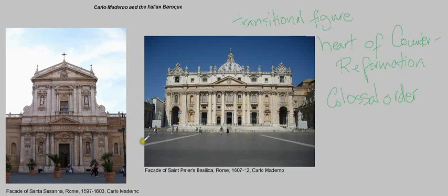We don't see that in Santa Susana, which is a smaller, more intimate setting. So it makes sense that you wouldn't see it there, but the facade of St. Peter's Basilica is kind of showing us a hint of what's to come in later Baroque.